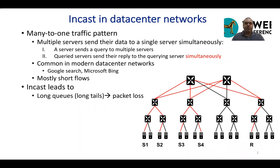Let's dive into the problem and see what we are trying to solve. We are trying to solve the in-cast problem in data center networks. What is in-cast? In-cast happens in data center networks when multiple servers send their data to a single server simultaneously. You see a figure on the right — the receiver is denoted by R, and we have four servers denoted by S1, S2, S3, and S4. In-cast happens when a server sends a query to multiple servers; those servers are denoted by R, the server that sends the query.